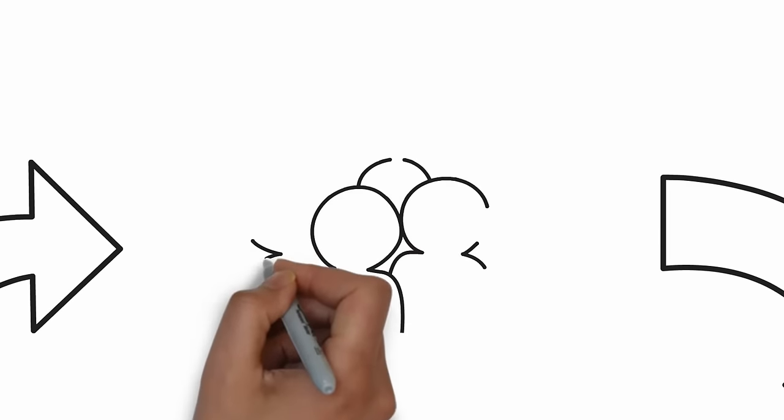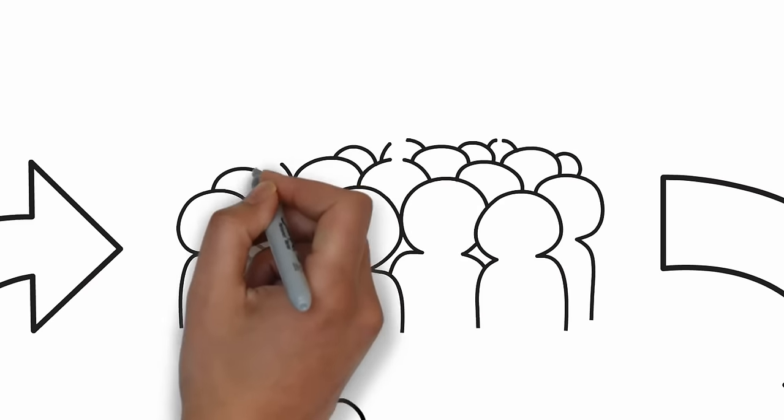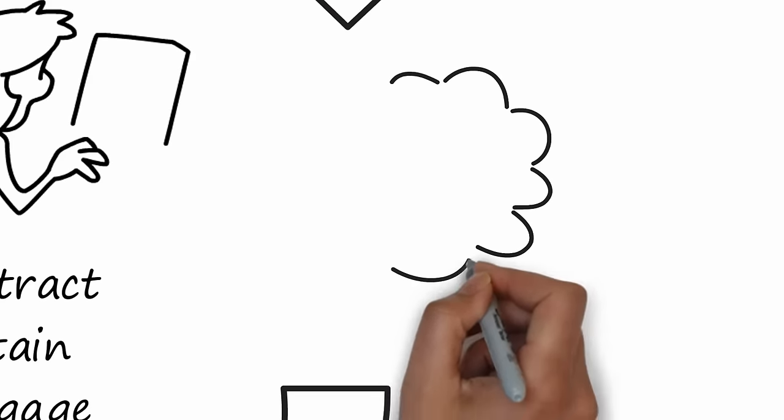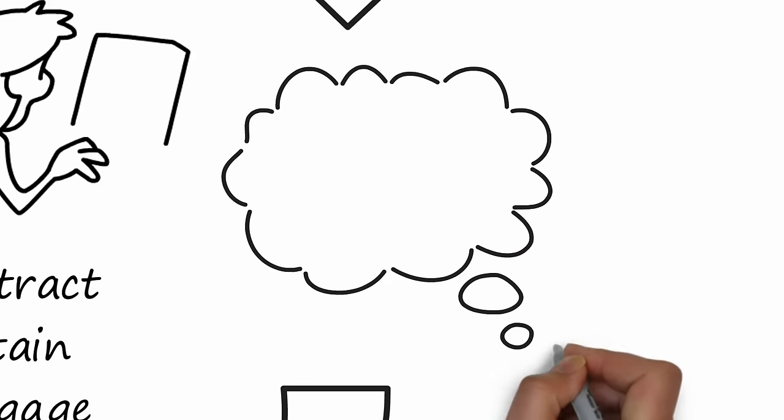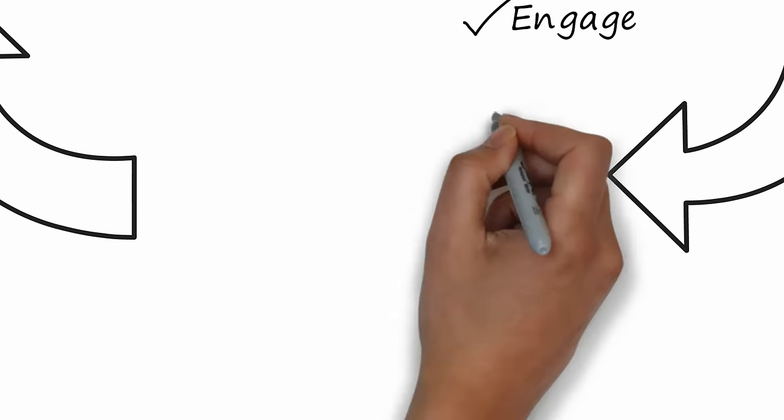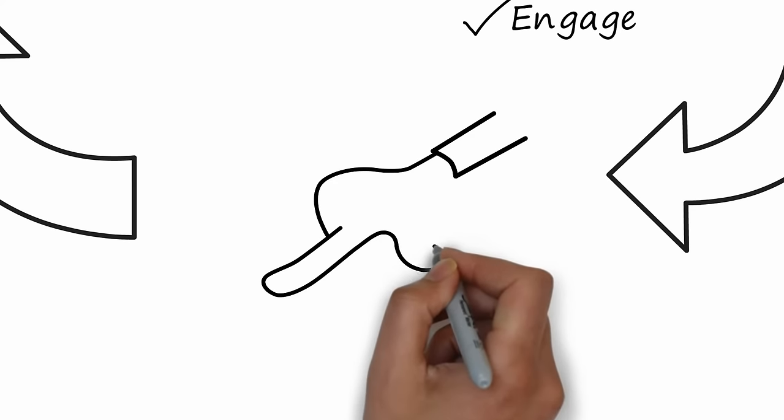Recruiting is the process of generating a pool of qualified candidates for a job. A job interview is a type of selection test that involves a conversation between an applicant and the employer. Selection is the systematic process of hiring the right person for the right job at the right time.